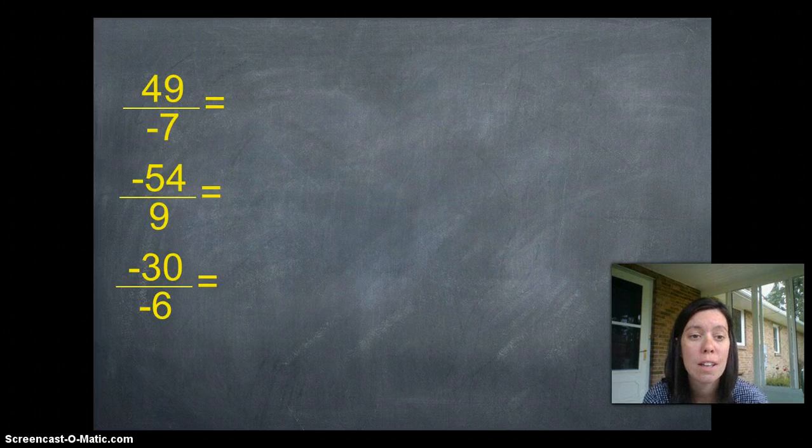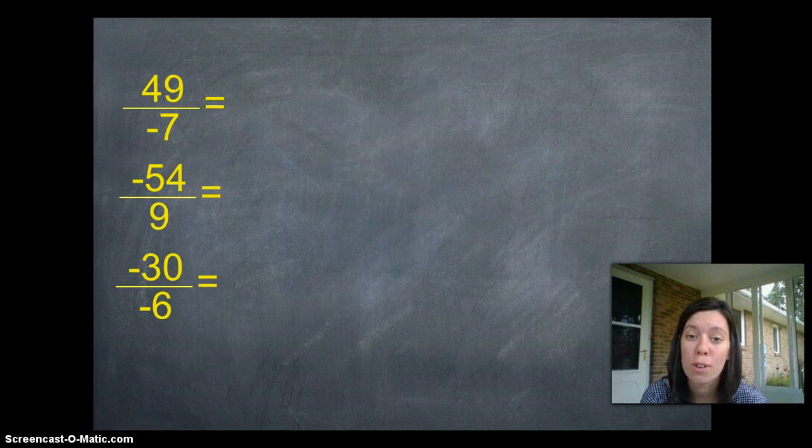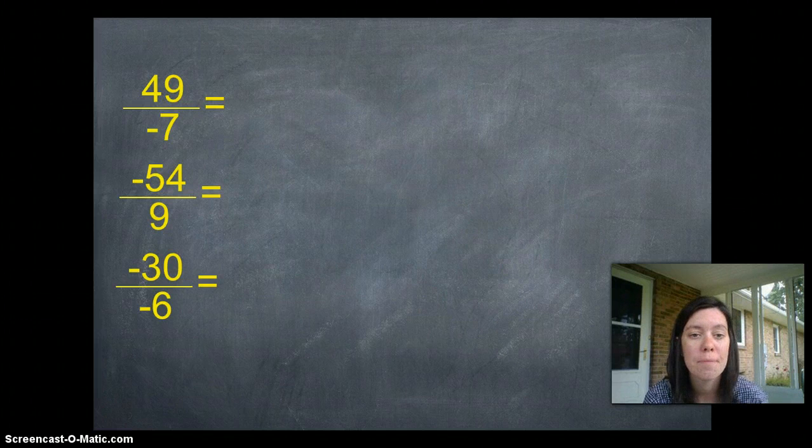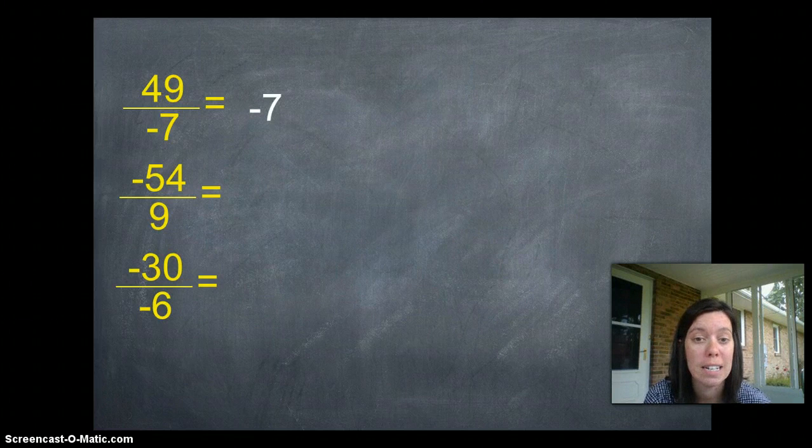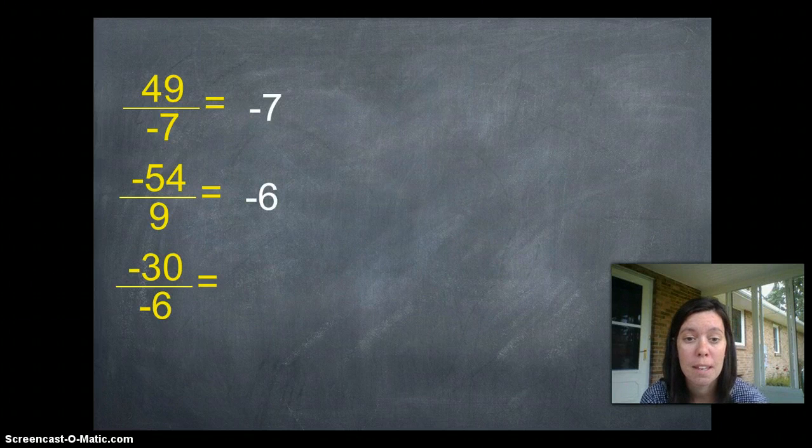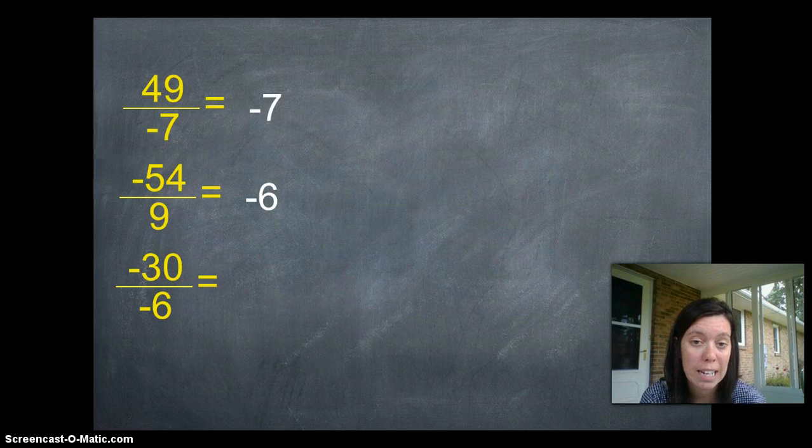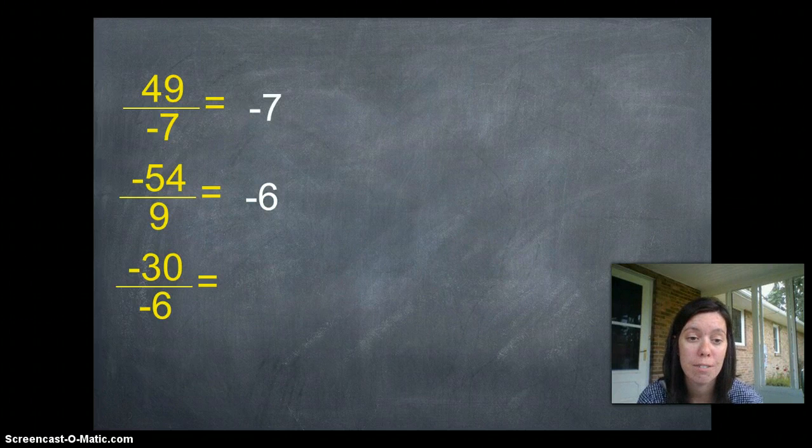Let's do a little practice. Forty-nine over negative seven - that's the same as forty-nine divided by negative seven. That gives you negative seven. Negative fifty-four over positive nine is negative six. Negative thirty over negative six - those are two negatives, so your answer will be positive: positive five.